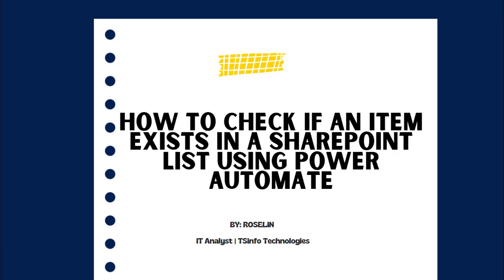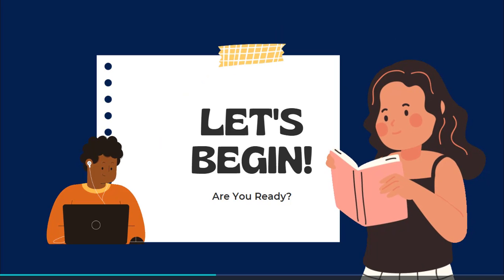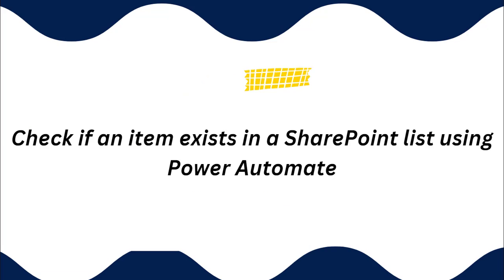Hello everyone, welcome to this YouTube channel. My name is Roslyn, and in this video we will see how to check if an item exists in a SharePoint list using Power Automate. We are going to use a SharePoint online list with different fields. Using the Power Automate flow, we will check if the item already exists. If it does not exist, we will create a new item; if it does, we will show a message that the item already exists.